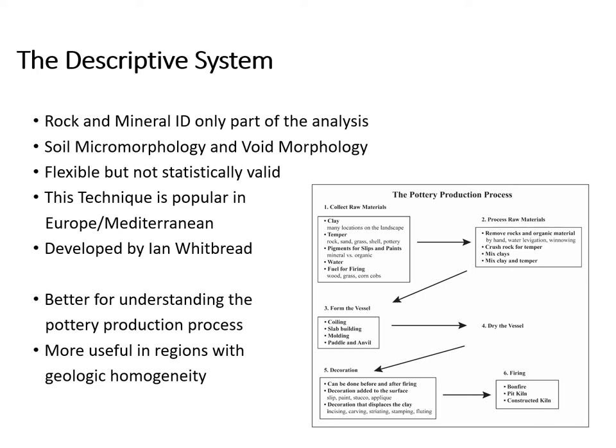Although methods borrowed from geology are essential for describing rock and mineral inclusions, additional methods are required to address features arising from the technological processes of ceramic production. The descriptive system is a qualitative approach to the characterization of ceramic thin sections. It not only provides a systematic method for identifying rocks and minerals, it offers a way to evaluate the clay by using terminology and concepts borrowed from soil micromorphology. This technique provides greater sensitivity to technological properties by applying a comprehensive and systematic method of description to record all features, not just the rock and mineral inclusions.